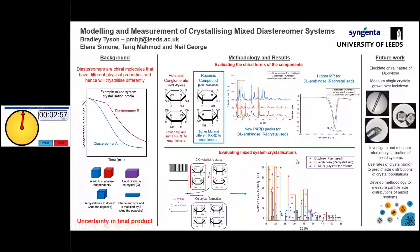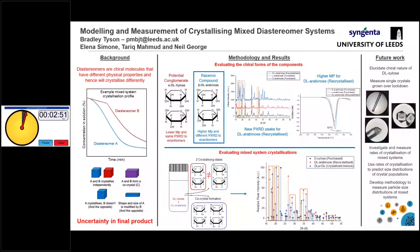I'm Bradley Tyson, and I'm going to talk to you about modeling and measuring crystallizing mixed diastereomer systems. Just to give you a little bit of background, diastereomers are a class of chiral molecules that have different physical properties, such as solubility and melting point, and hence they'll crystallize differently.